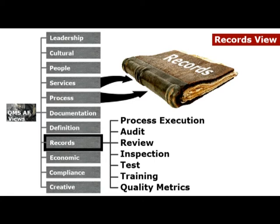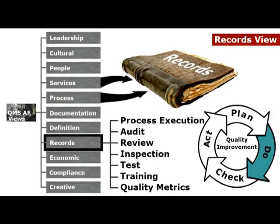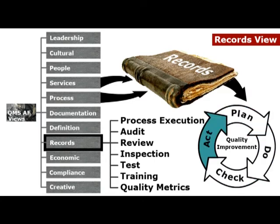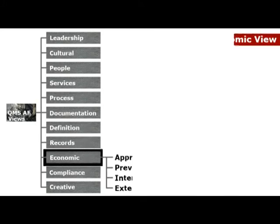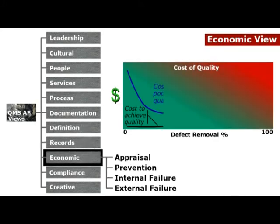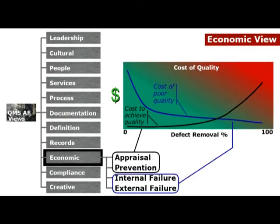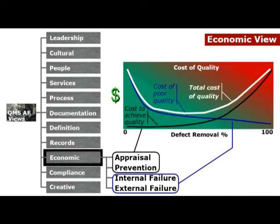The records view provides a list of records generated by business processes. For example, test records are a must for an effective test program. They also provide input to quality improvement programs. The economic view is a pragmatic evaluation of how much quality management is costing you — it's an aid to focusing your efforts at the points where you'll get the greatest return.